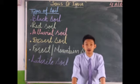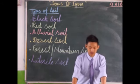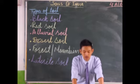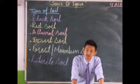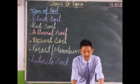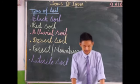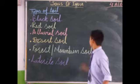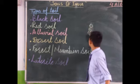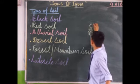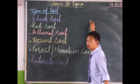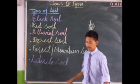Soil erosion takes place when soil is washed away by water or blown away by the wind, river, or rain. Soil erosion normally takes place in areas that have a steep slope. The soil from such slopes is eroded and carried away by river water or wind.